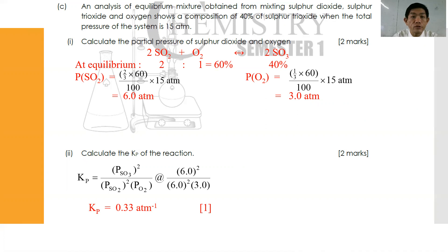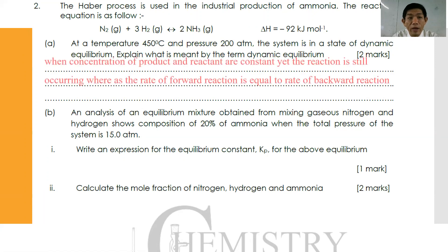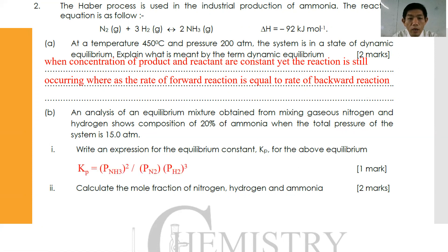This is a very direct question — hopefully you can understand how to solve it. Moving on to question number two: the Haber process is used industrially for the production of ammonia. The reaction equation is N₂ + 3H₂ → 2NH₃, ΔH = −92 kJ/mol. At 450°C and 200 atmosphere, the system is in the state of dynamic equilibrium. Explain what is meant by dynamic equilibrium: the concentration of reactants and products are constant, yet the reaction is still ongoing, at the rate of forward reaction equal to the rate of backward reaction.